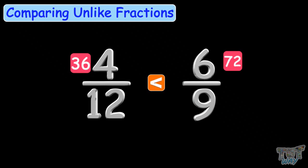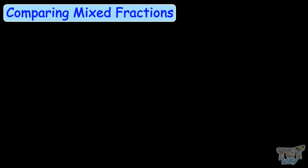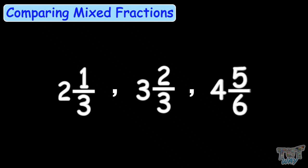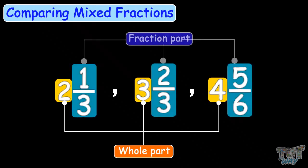So friends, now we know how to compare unlike fractions. Now we will learn how to compare mixed fractions. Here we have some mixed fractions: 2 and 1 by 3, 3 and 2 by 3, 4 and 5 by 6. They have a whole part and a fraction part.